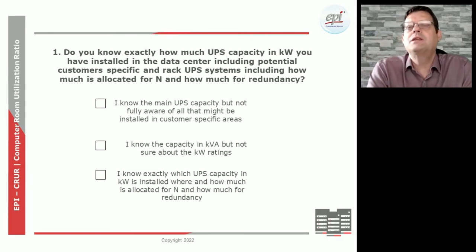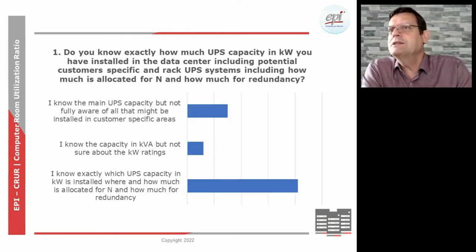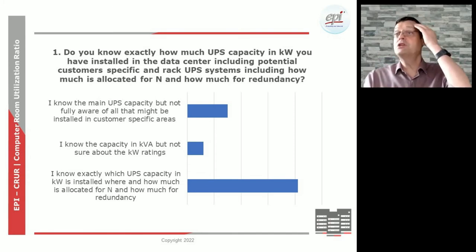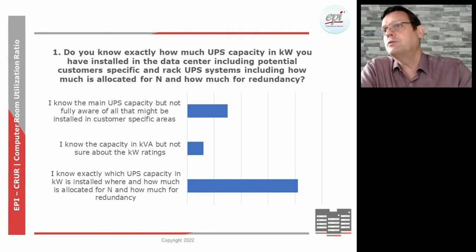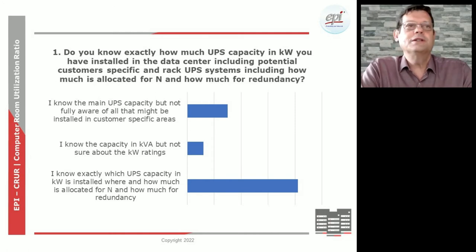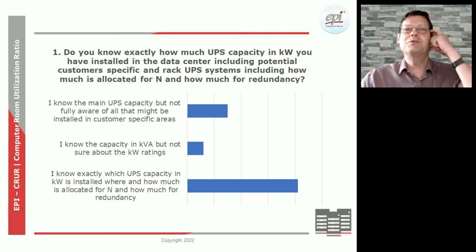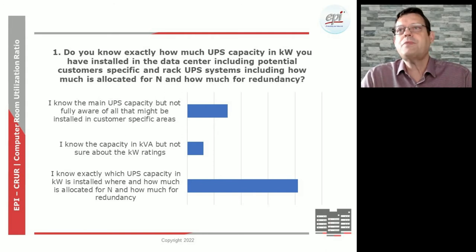The manufacturer of your UPS can indicate the kilowatt rating — you might find it in a brochure or even look at the label on the UPS, typically on the back. About 70% have a pretty good handle on all that is required, and 25 to 30% might need to do a bit of further investigation. So 30% of you need to do some extra investigation when you want to apply the CRUR.